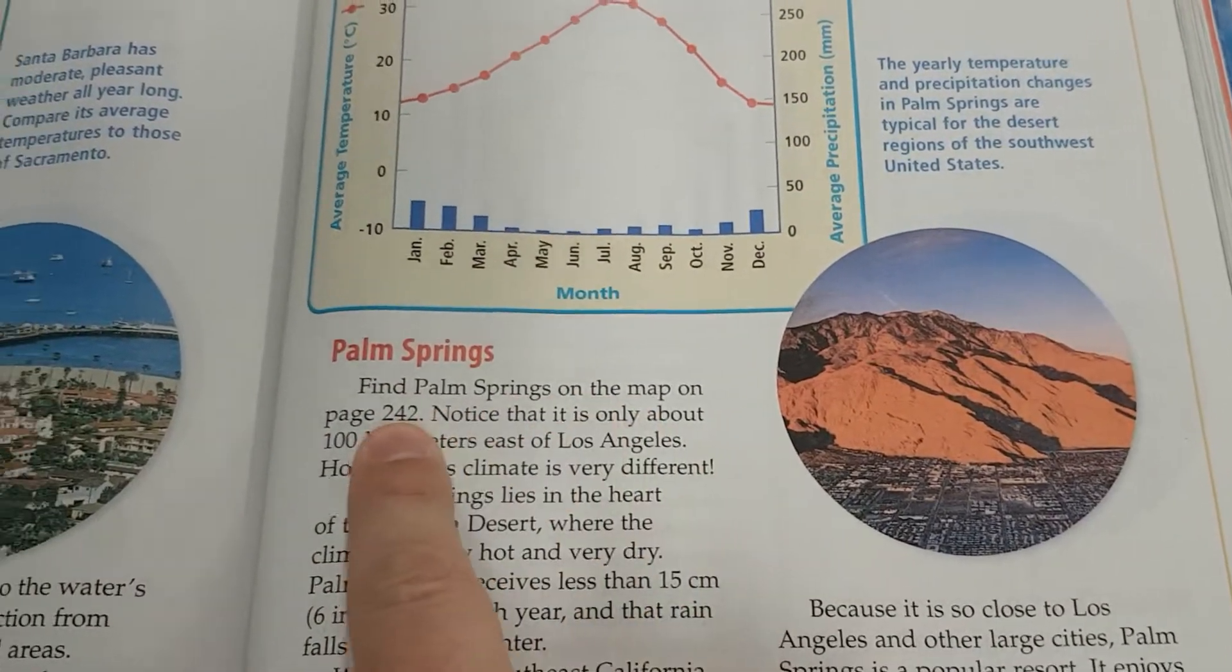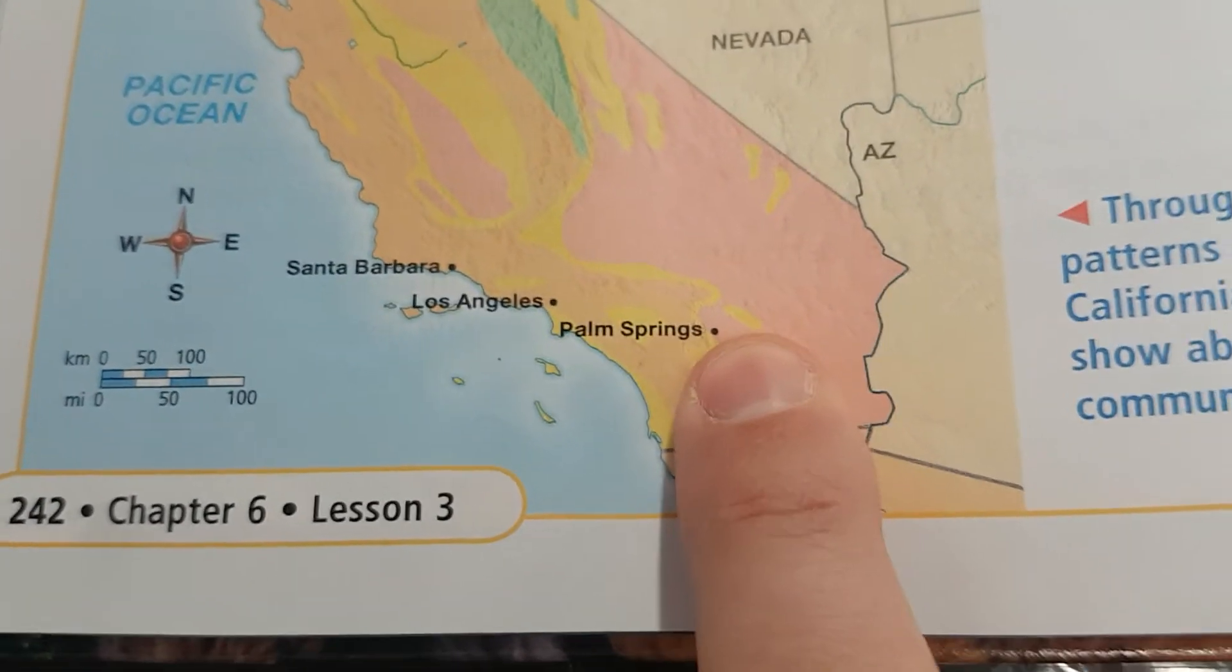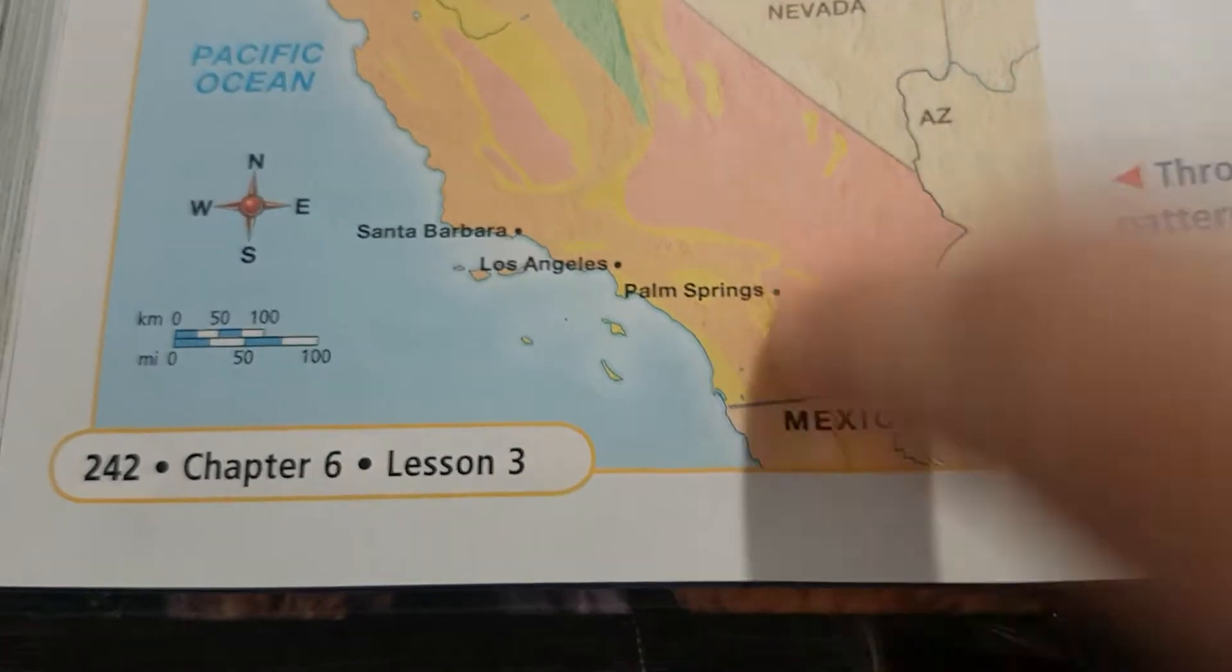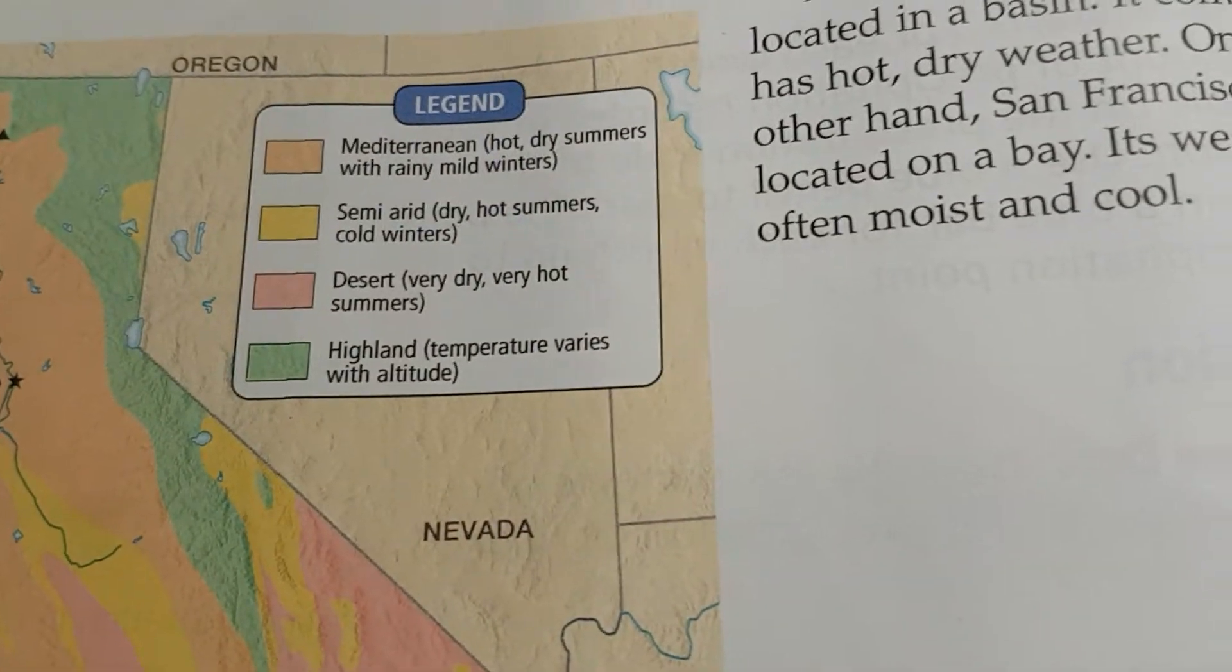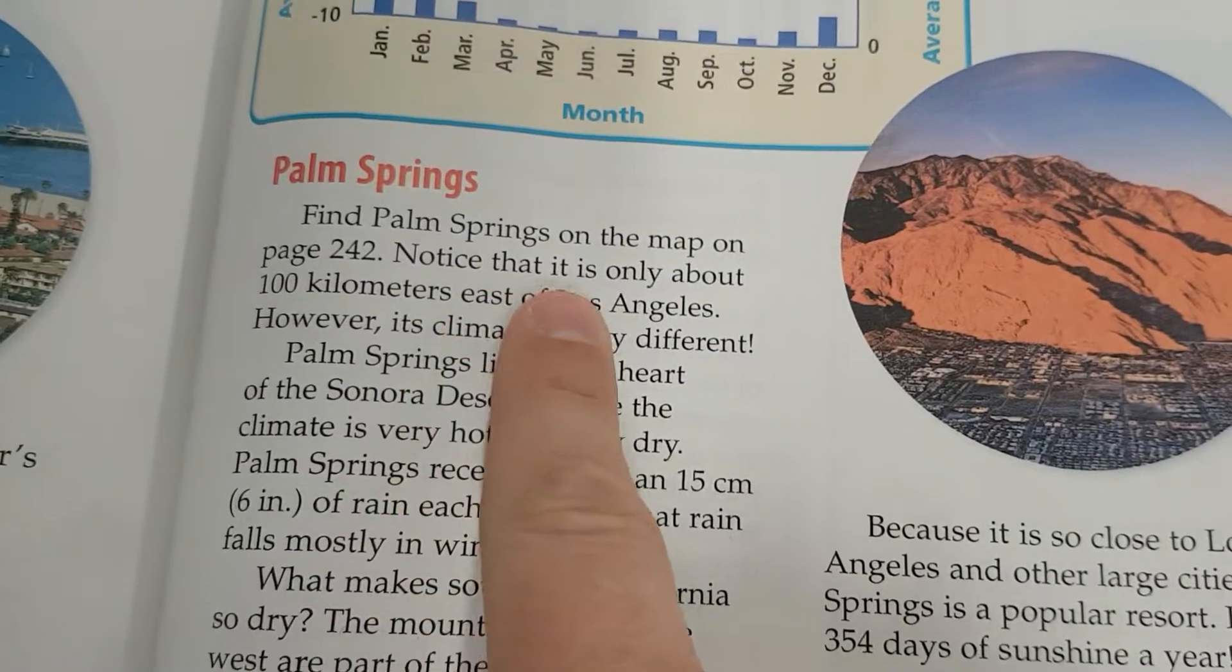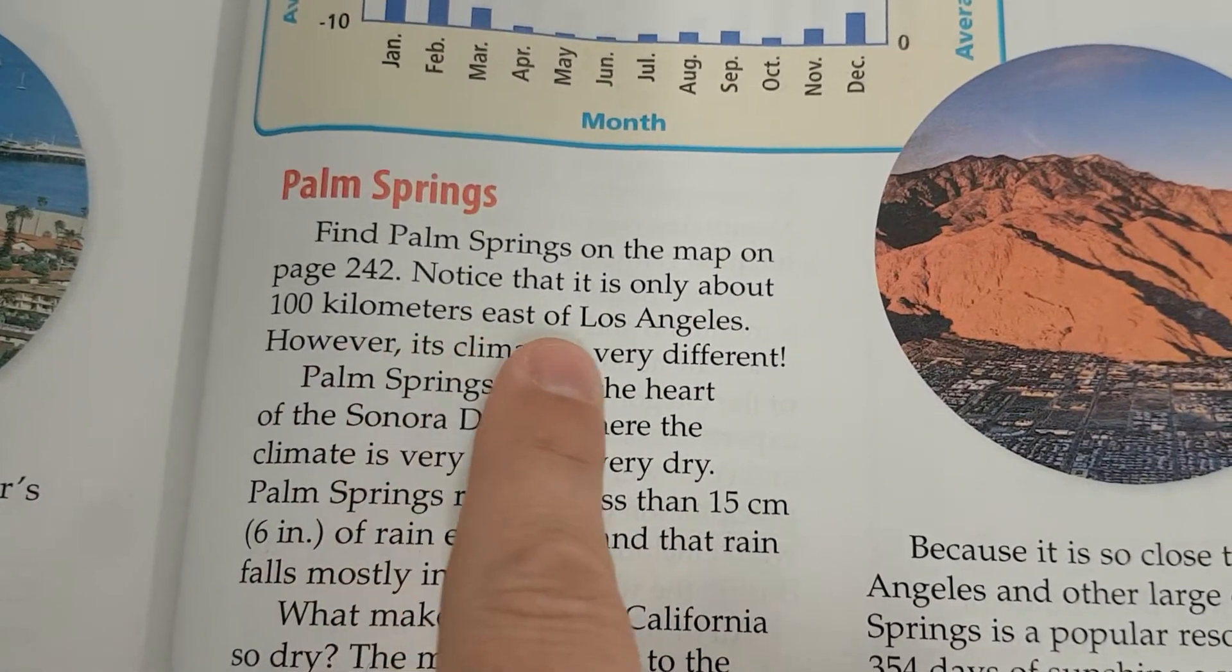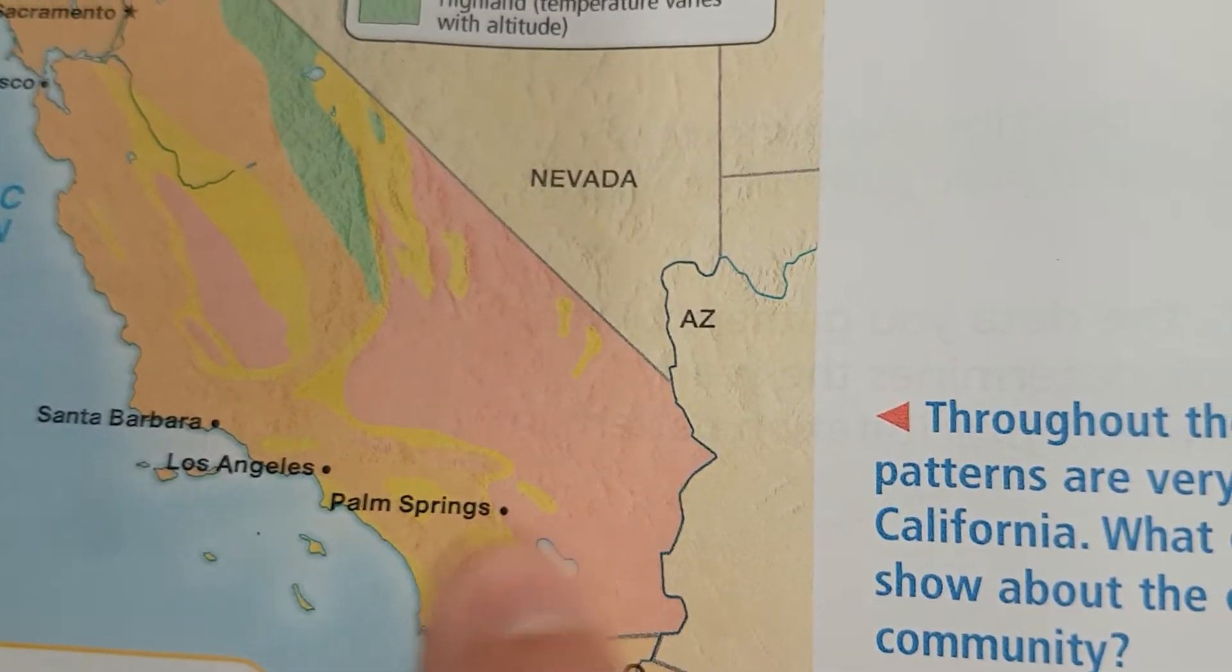Find Palm Springs on the map on page 242. Okay, here it is over here. It's kind of in that yellowish pinkish area, semi-arid or desert. Notice that it is only about 100 kilometers east of Los Angeles. So it's just a little bit east of Los Angeles.